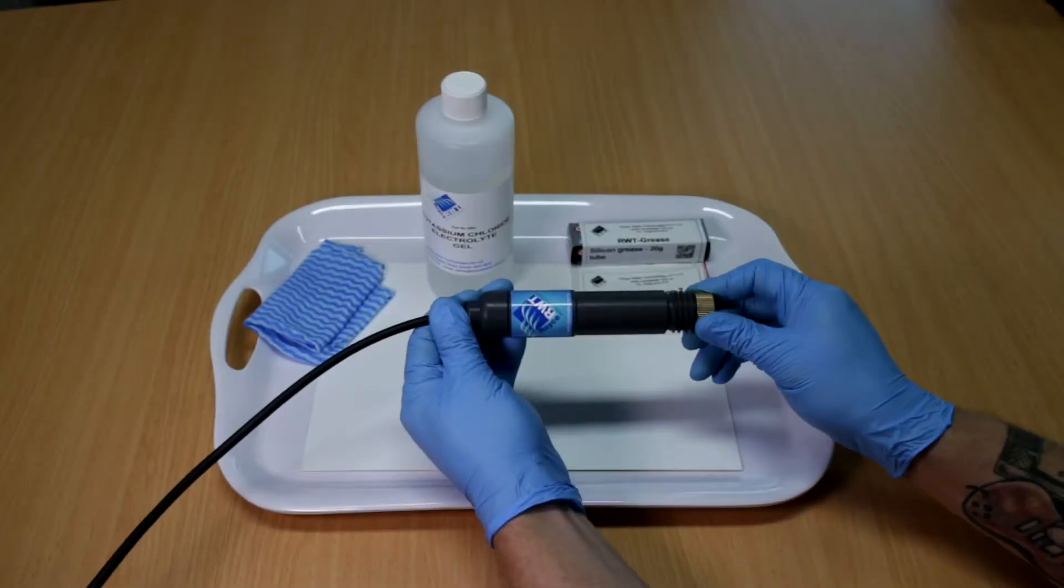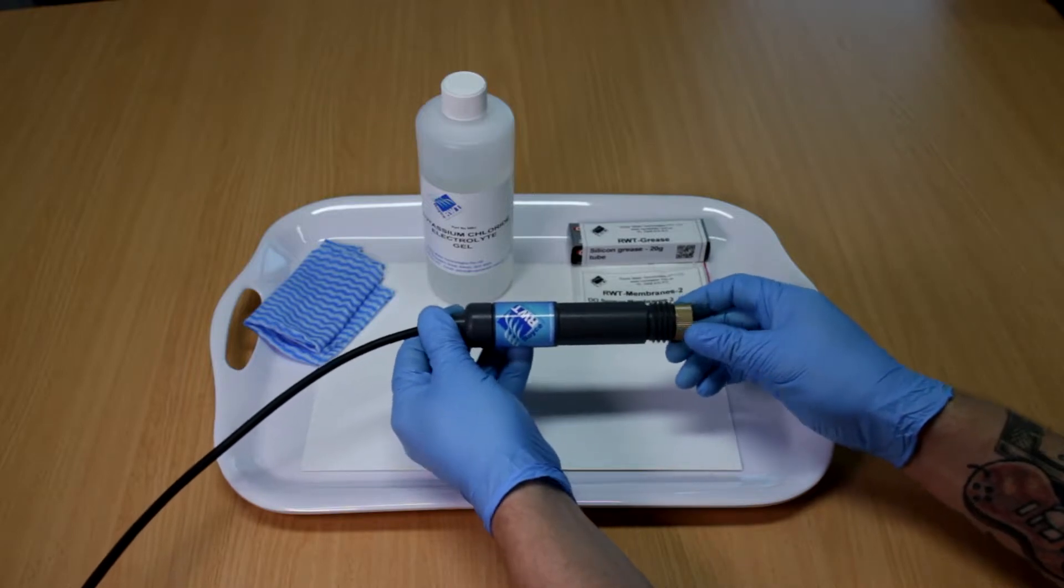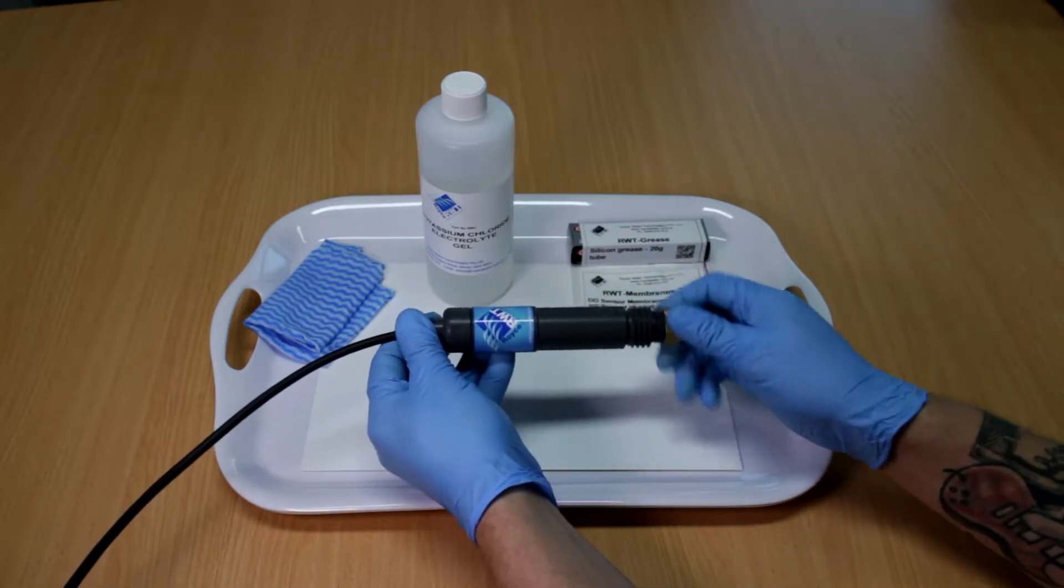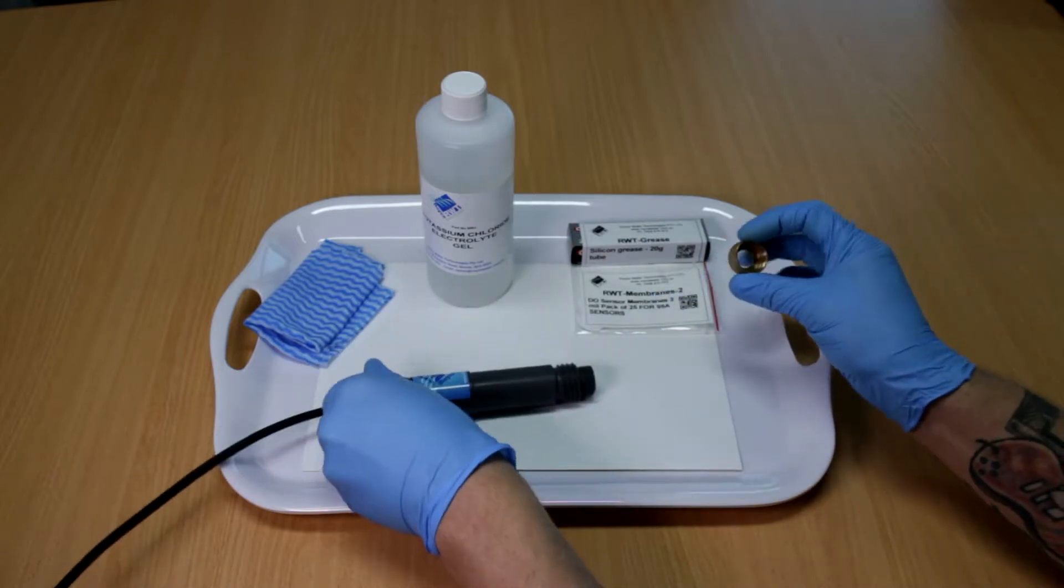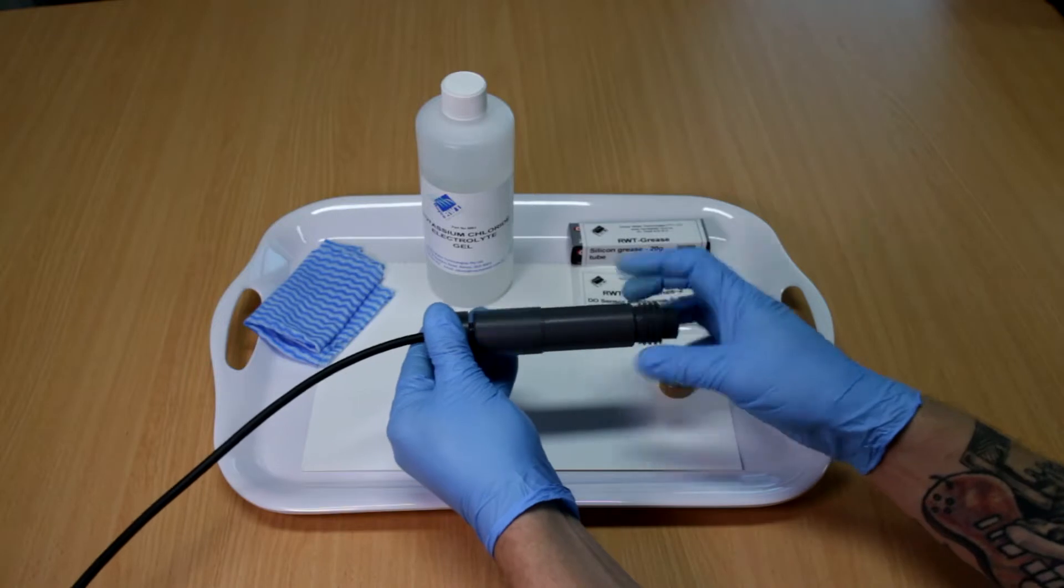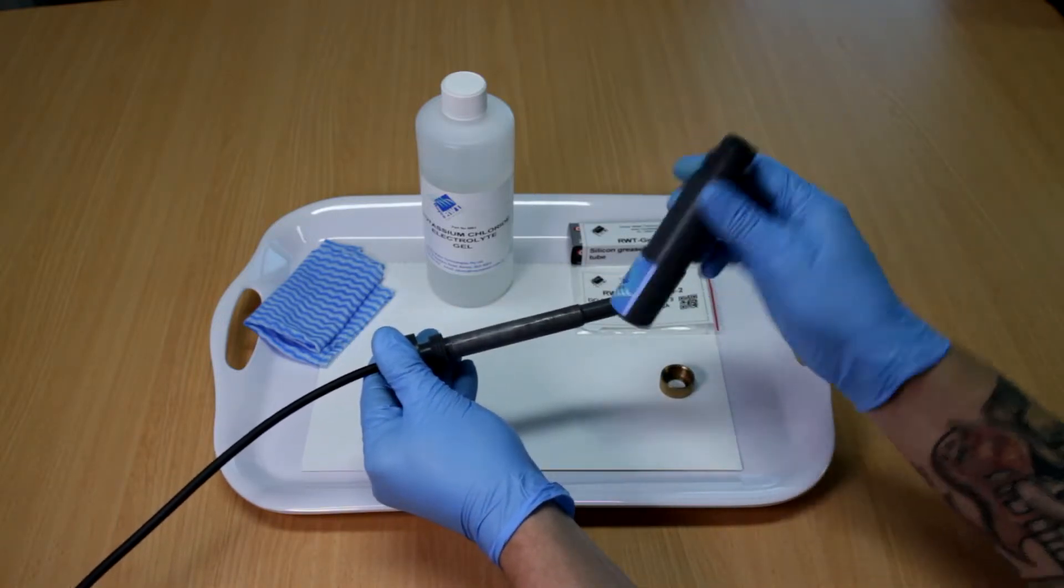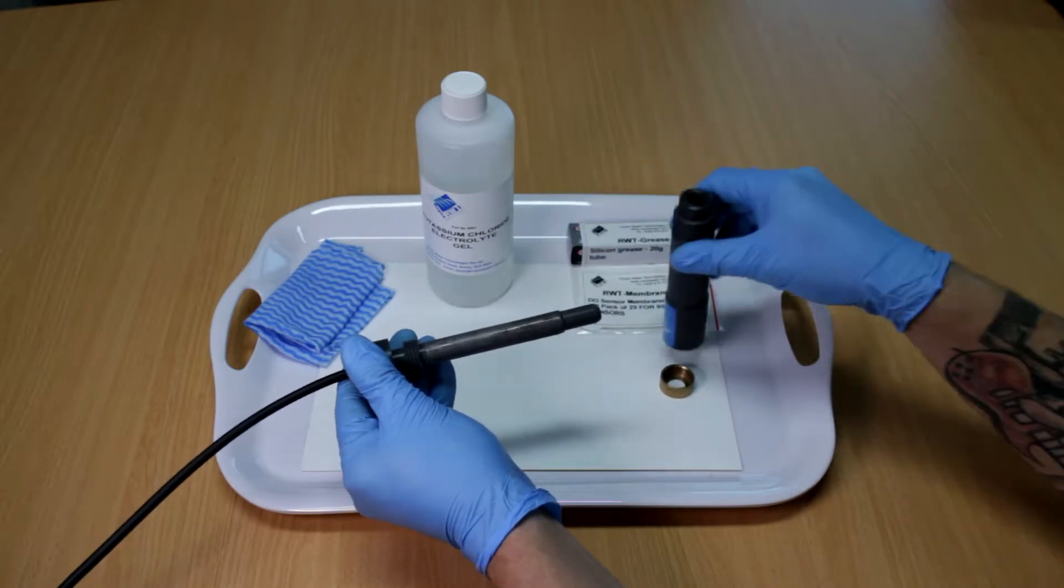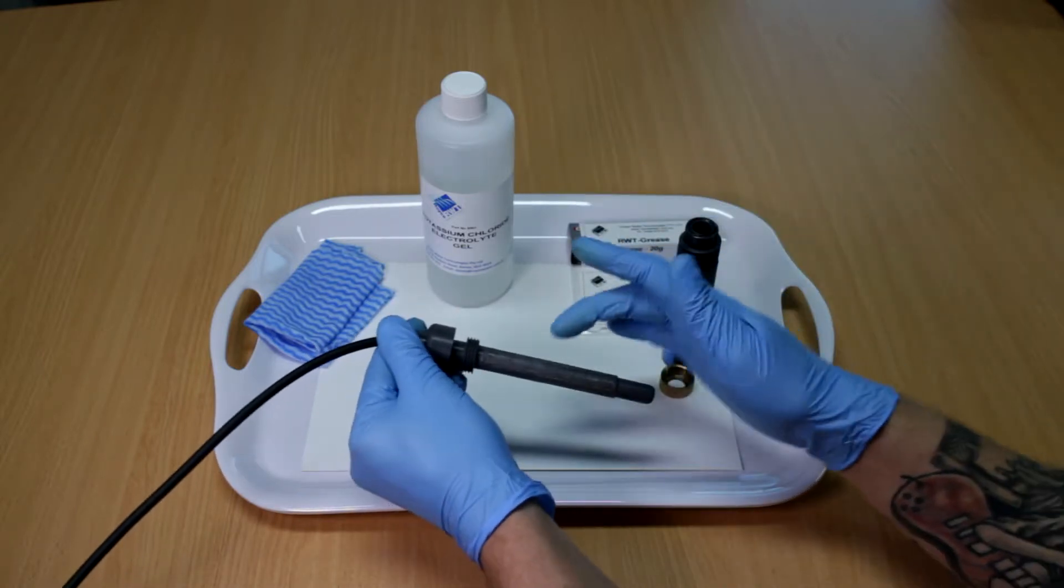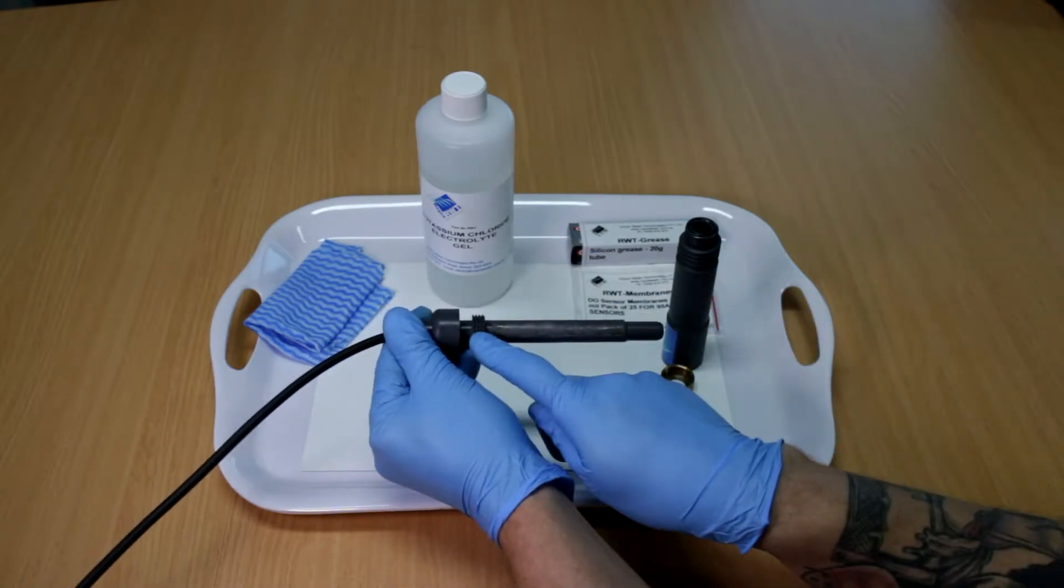This is the Royce water technologies G95A dissolved oxygen sensor as it comes out of the packet. We have a brass retainer cap for the membranes, we have a canister with O-rings on both ends, and this is the body of the probe: it's anode, a cathode, and a venting groove.